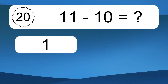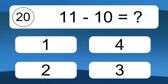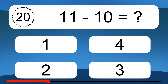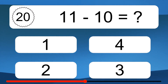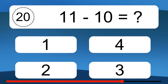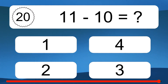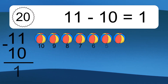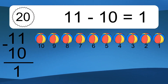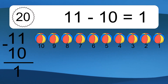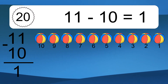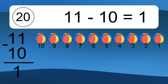11 minus 10 equals what? 11 minus 10 equals 1. Let's count it: 10, 9, 8, 7, 6, 5, 4, 3, 2, 1.